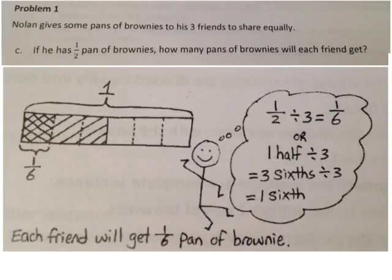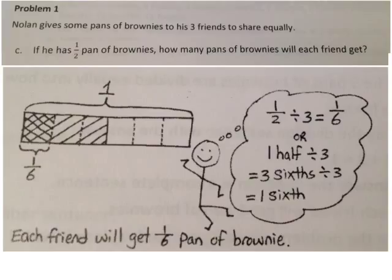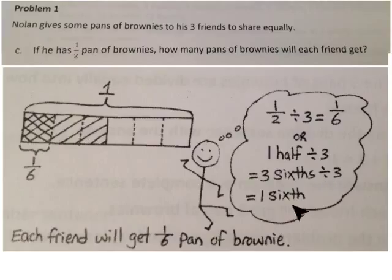Our tape diagram shows that we have half a pan of brownies shared with three people. So our half is divided into three equal parts. We divided the other half into three equal parts too, so that we would have equal parts across the whole pan of brownies, showing that each part is one-sixth. We have half a pan divided amongst three people, so each person would get one-half divided by three, or one-sixth pan of brownies. One-half divided by three is three-sixths divided by three, and that's one-sixth.